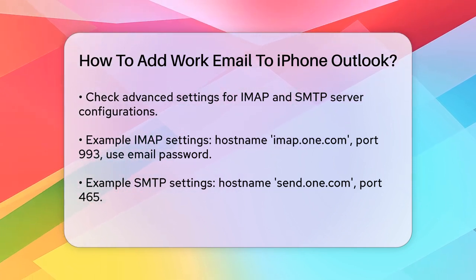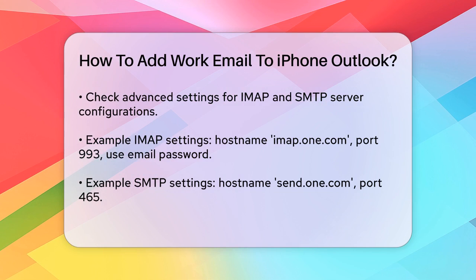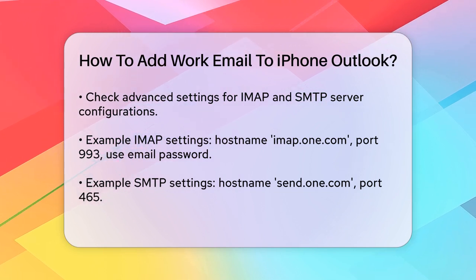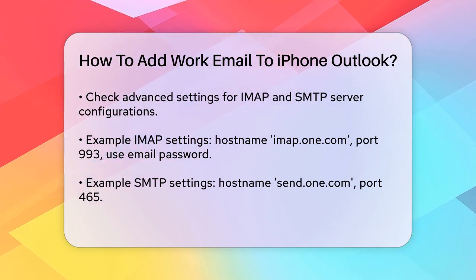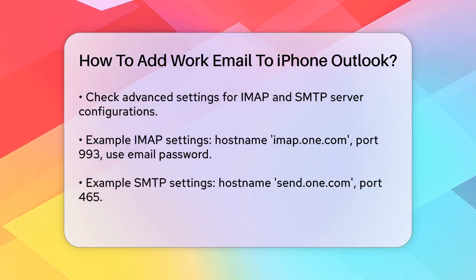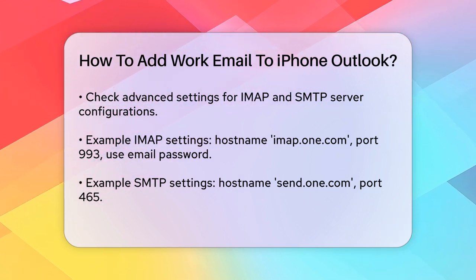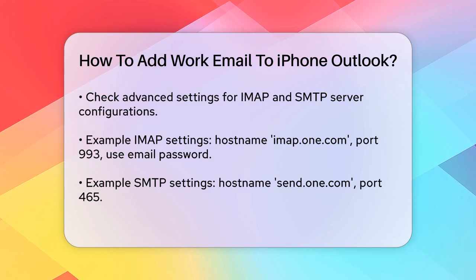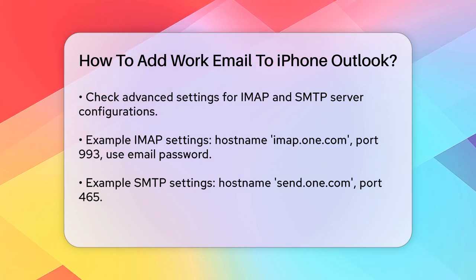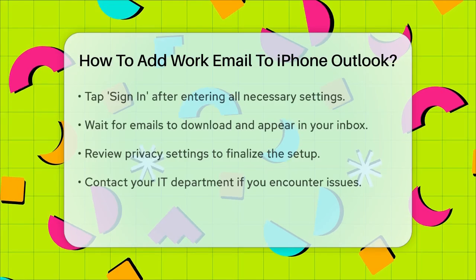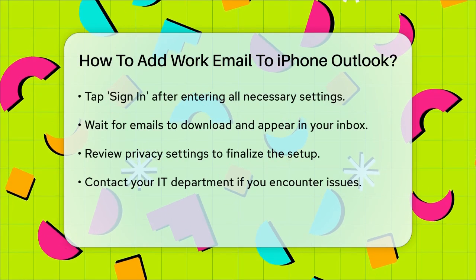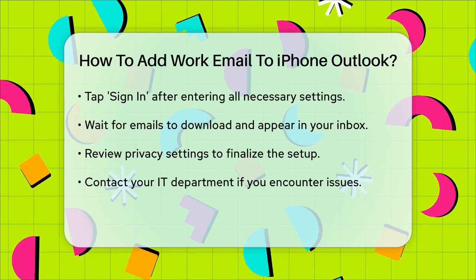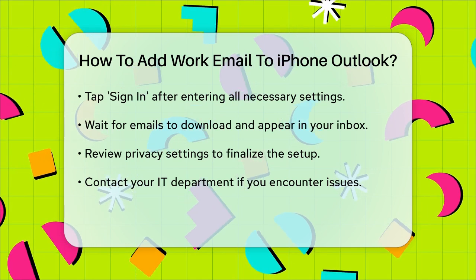For SMTP, the host name could be send.one.com with a port number of 465. Once you've entered all the necessary settings, tap Sign In. If everything is correct, your account will be set up and you'll start seeing your emails in the Outlook app.